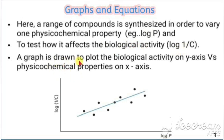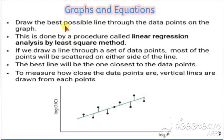Now we draw a graph with biological activity (log 1/C) on the y-axis and the physico-chemical property (log P) on the x-axis. We then draw the best possible line through the data points using a procedure called linear regression analysis by the least squares method.